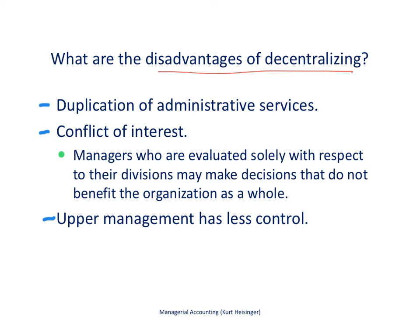There are also disadvantages to decentralizing. First, there is often duplication of administrative services. For example, a community college district overseeing several campuses may have each campus maintain its own human resource, payroll, and accounting services rather than centralizing those at the district level. This duplicates services and costs. That's a disadvantage — spreading out decision-making also spreads out the number of employees needed to provide those administrative services.